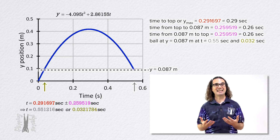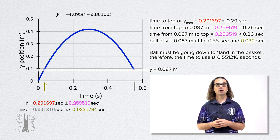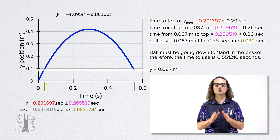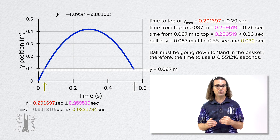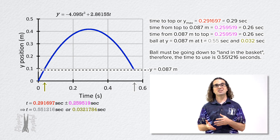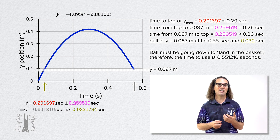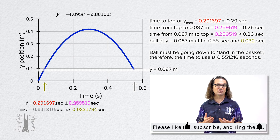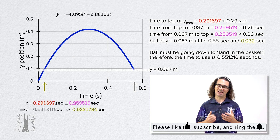In order for the ball to land in the basket, the ball must be moving down. Therefore, it must be the larger of the two times — the second time the ball is at a height of 0.087 meters and moving downward — that it reaches the basket. That is how we know the time to use is 0.551216 seconds. Hopefully, you now recognize how useful the quadratic formula can be and you remember that you must write down the quadratic formula every time you use it.